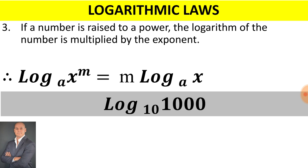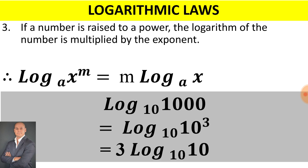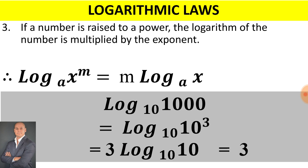Let's take a look at another example: log base 10 of 1000. If we rewrite 1000 in exponential form, we'll have log base 10 of 10 to the exponent of 3. Therefore, we can take the 3 across: it will be 3 multiplied by log base 10 of 10. Since log base 10 of 10 equals 1, the answer is 3 multiplied by 1, which gives us 3.